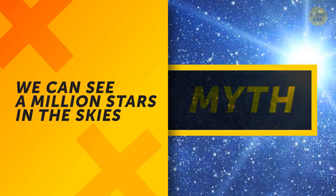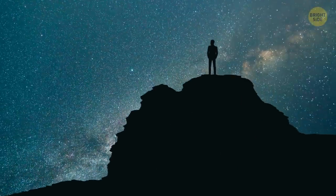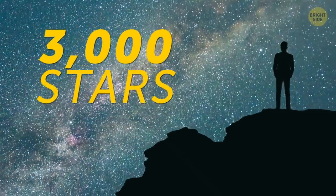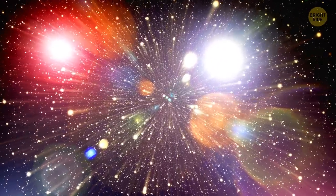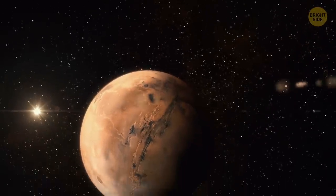We can see a million stars in the skies. The number is actually much more modest. Only about 3,000 stars. There are lots of other objects we may also see and mistake them for stars. Planets in the Solar System, distant galaxies, and just satellites.